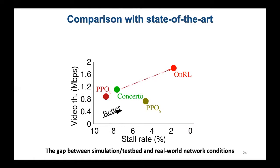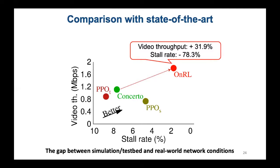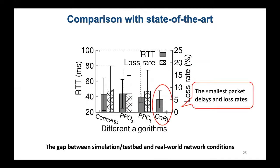We examine the limitations of offline learning under real-world network conditions. Comparing with state-of-the-art methods, we find that OnRR achieves the most compelling video QoE. In particular, it outperforms the most competent offline-trained scheme by 31.9% in terms of video throughput and leads to a remarkable 78.3% reduction in stalling rate, corroborating the benefits of the online learning mechanism. OnRR also shows the smallest packet delays and loss rates, confirming its ability to cope with network dynamics and validating the necessity of online learning for real-time interactive video.